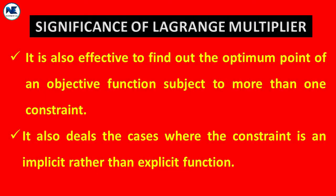The third point is that the Lagrange multiplier is also effective in finding the optimum point — either maxima or minima — of an objective function like a utility function, profit function, or cost function, subjected to more than one constraint.